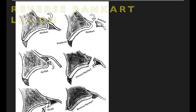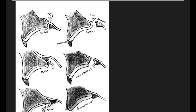This is the reverse Bankart lesion. You can see it in posterior dislocation of the shoulder. You can see the detached posterior inferior glenoid labrum along with tear of the periosteum. So it is exactly like the Bankart lesion but it is present in the posterior inferior aspect rather than the anterior inferior aspect.